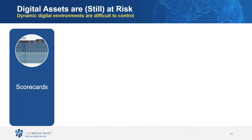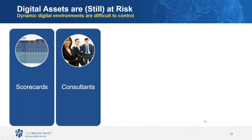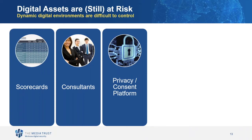In talking with our clients, we've summarized the issues into five groups. First, scorecards — but scorecards look at owned and operated code and don't normally account for third-party, fourth-party, or fifth-party code. Second, consultants — we repeatedly hear that consultants claim there is no third-party code on the asset, simply because they don't have the client-side expertise to assess what's truly executing in the browser or mobile app. Third, privacy and consent platforms like a CMP rely on being provided accurate information, but in a digital world this information is changing constantly.